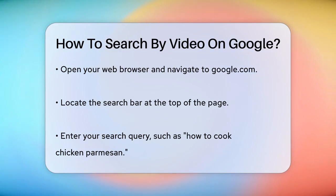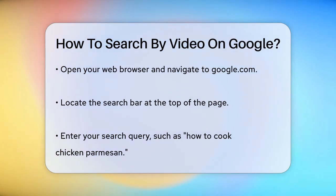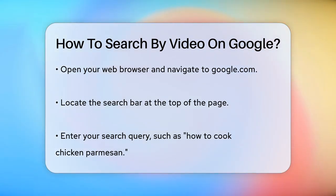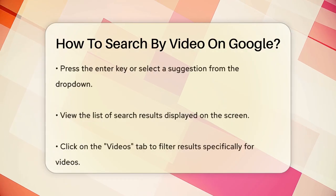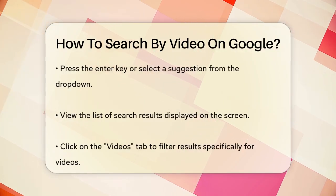First, open your web browser and go to google.com. You'll see a simple page with a search bar at the top. Click in this text box and type in what you're looking for. For example, if you're searching for a video on how to cook a certain dish, you might type 'how to cook chicken parmesan.'